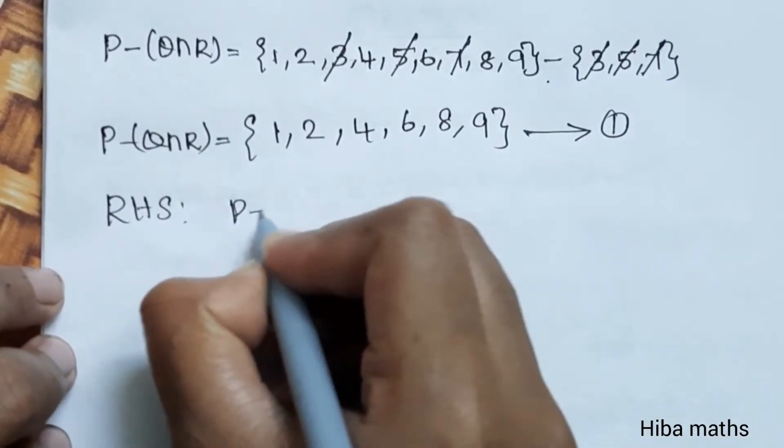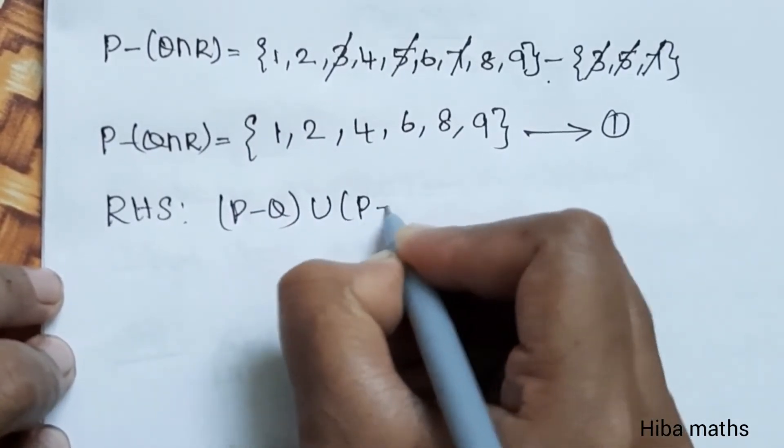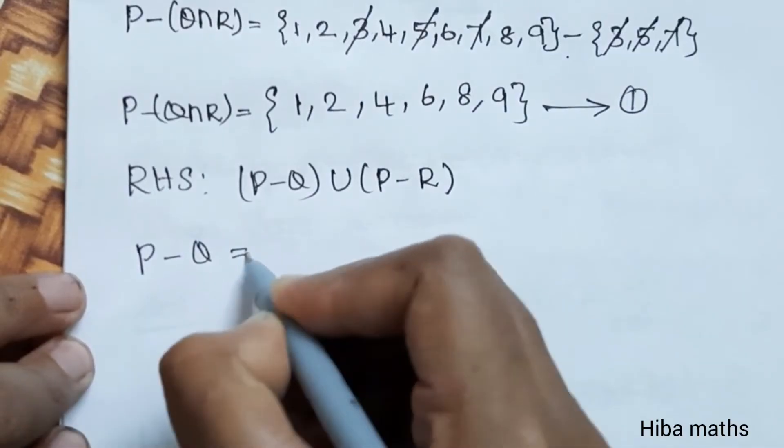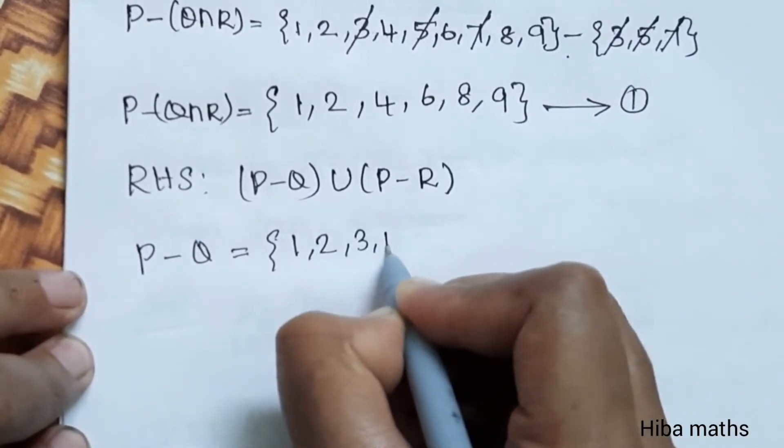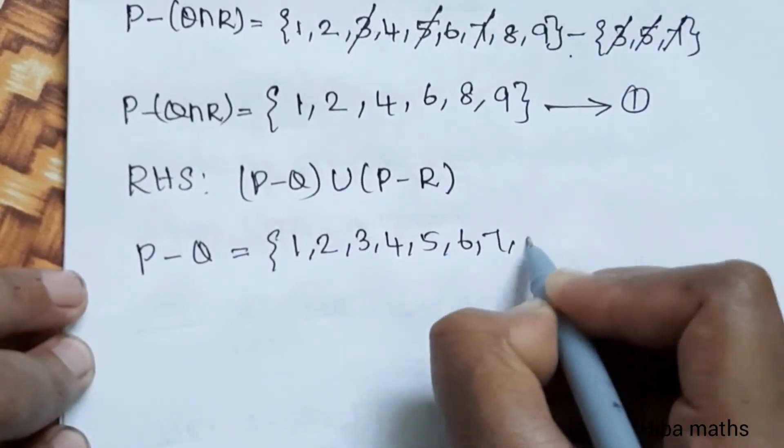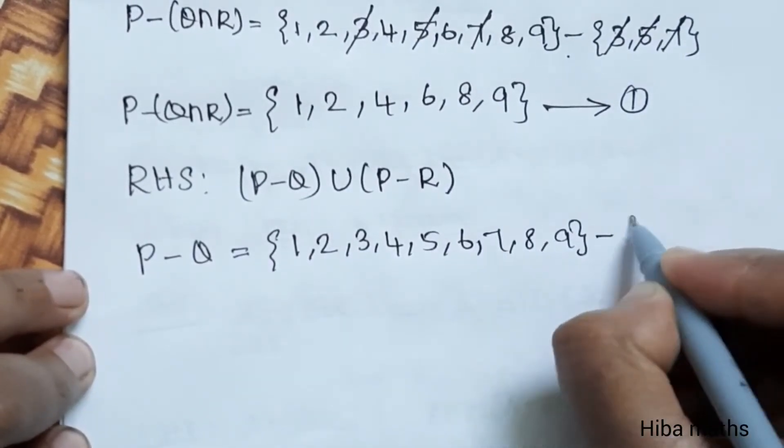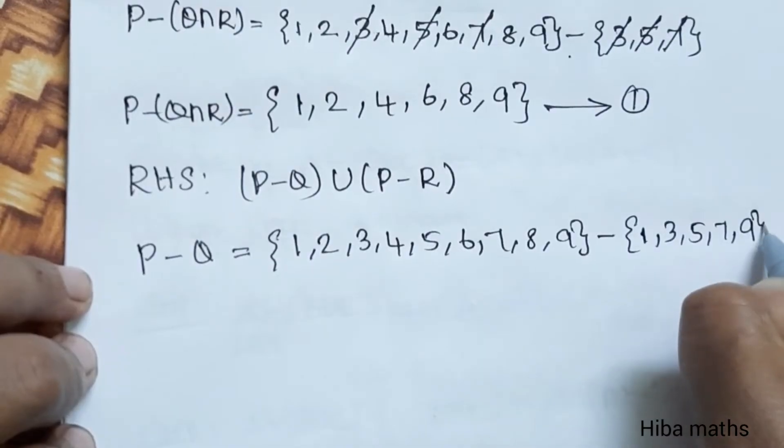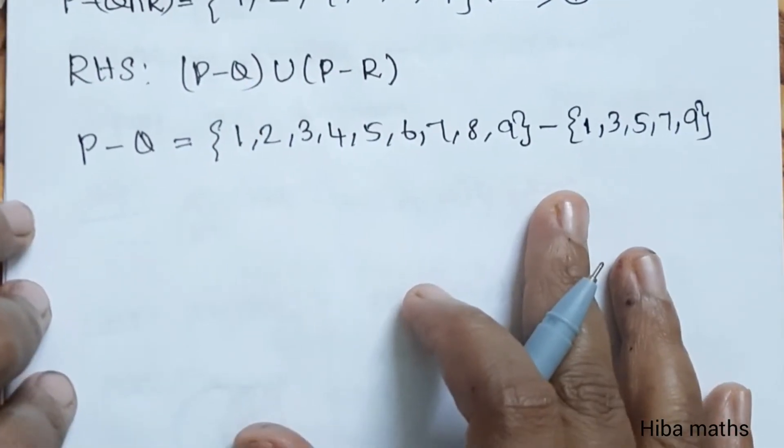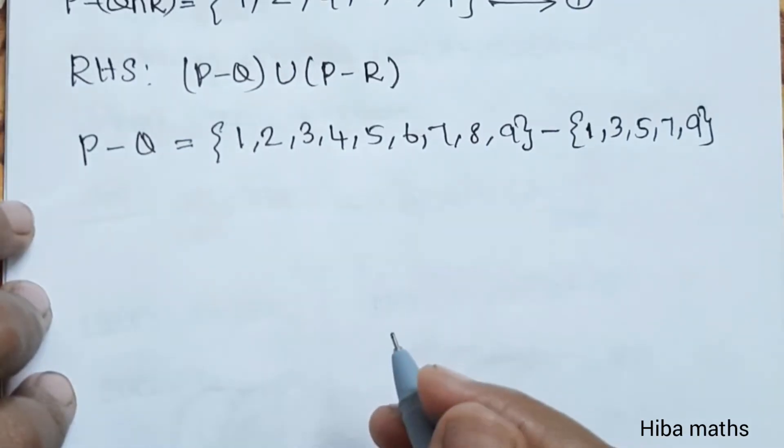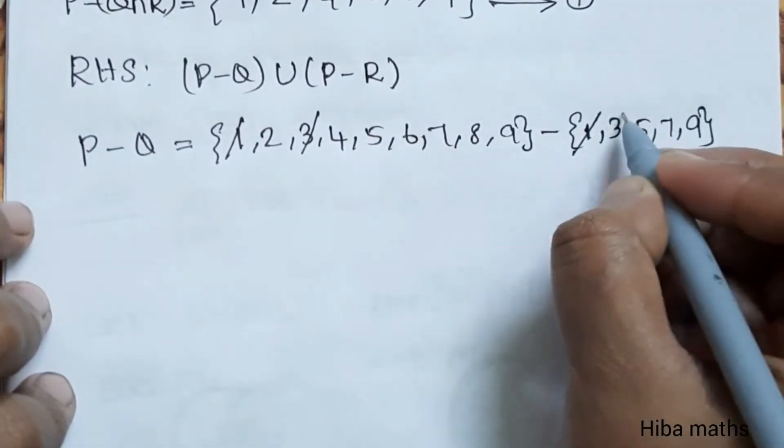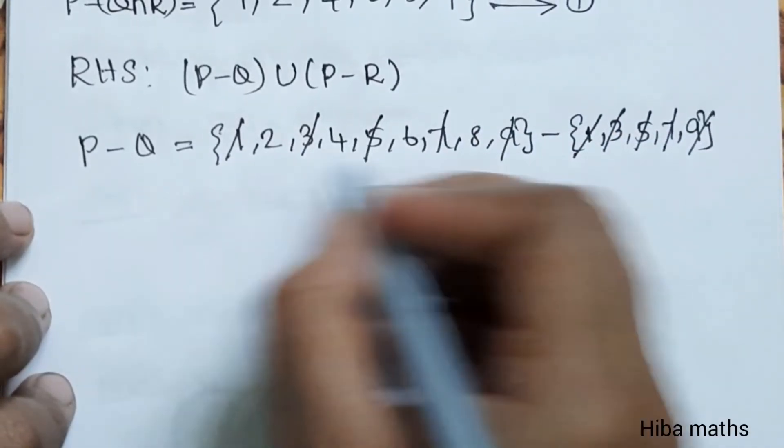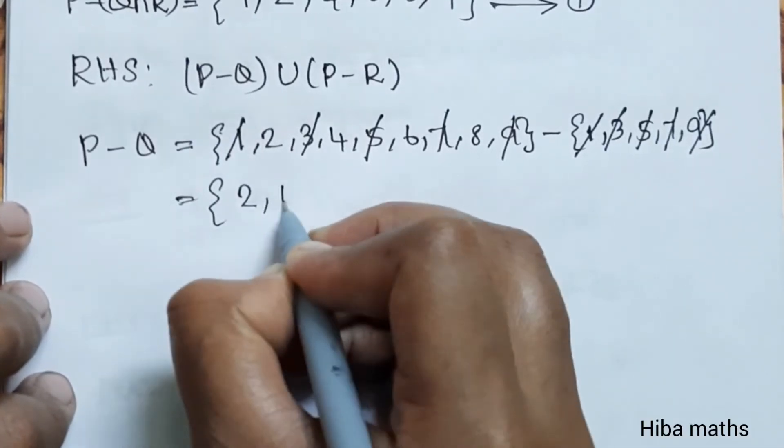RHS: P minus Q union P minus R. First P minus Q. P value is 1, 2, 3, 4, 5, 6, 7, 8, 9 minus Q value 1, 3, 5, 7, 9. Common elements cancel: 1, 3, 5, 7, 9. So P minus Q equals 2, 4, 6, 8.